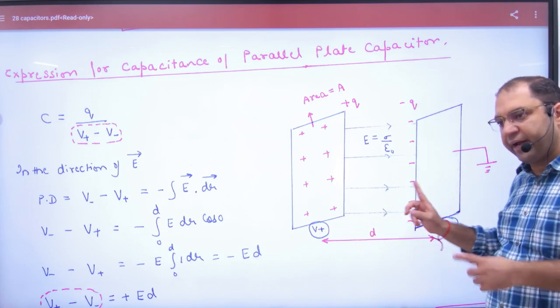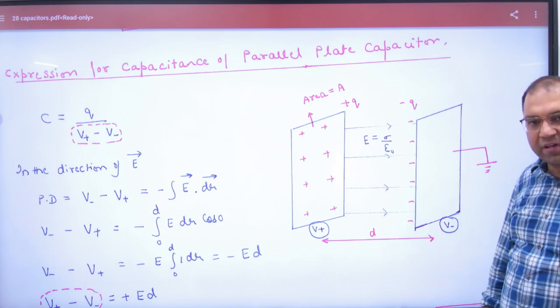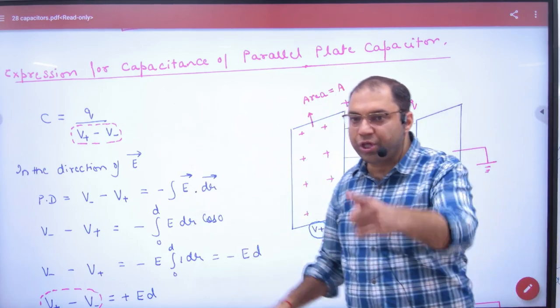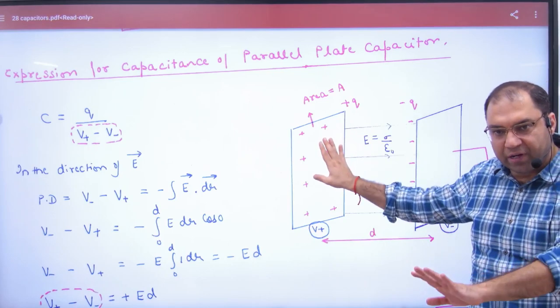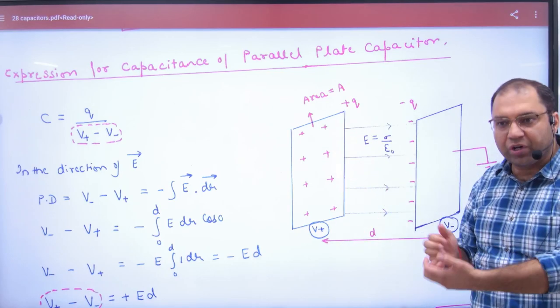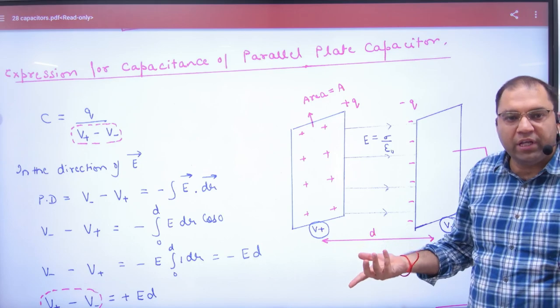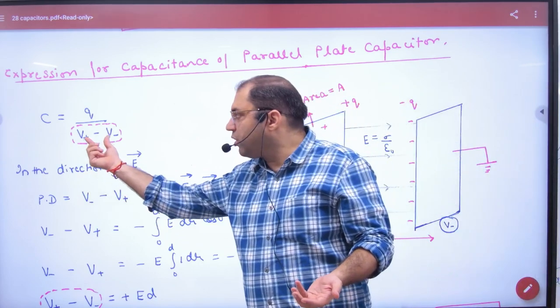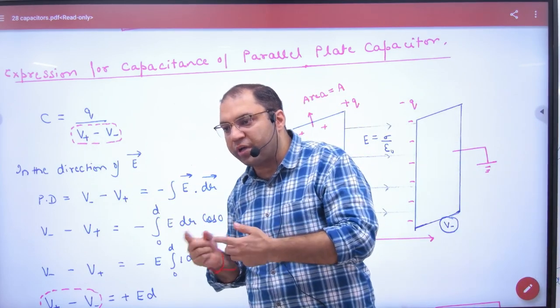Positive potential is greater, negative is small. If I want to find capacitance, C = Q/(V+ - V-). First plate charge Q divided by potential difference. Capacitance is not negative.